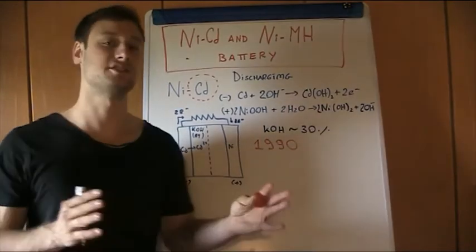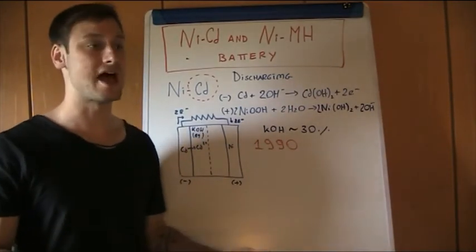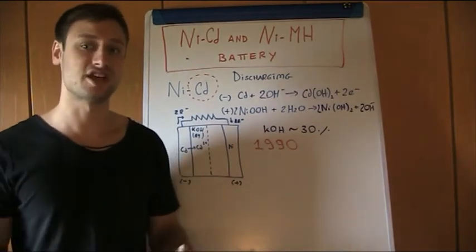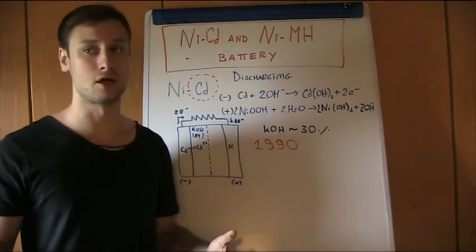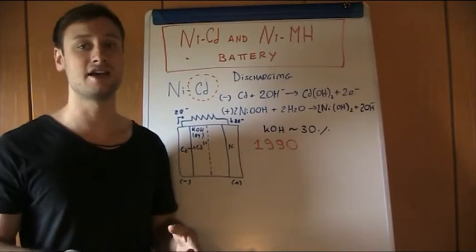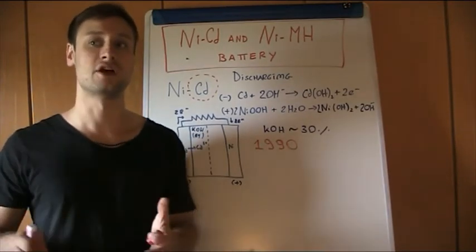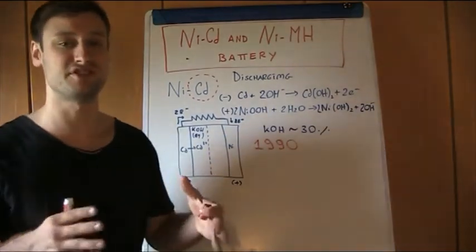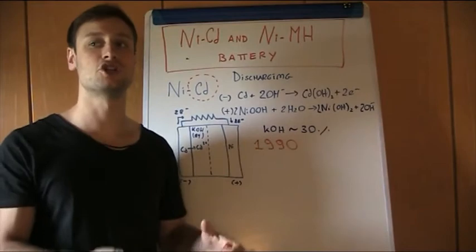It's important to remember what is the difference between specific capacity and energetic density. The difference between energetic density and specific energy is that one is referred over weight, unit of weight, and one is referred over unit of volume. The specific energy is the energy referred over unit of weight, so it's energy over kilograms, whereas the density is the energy over unit of volume.